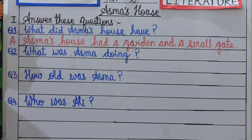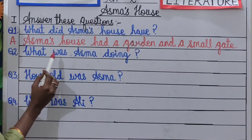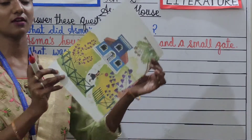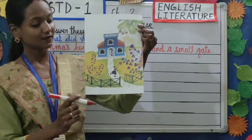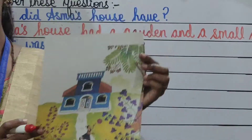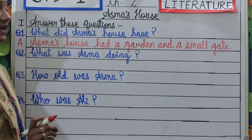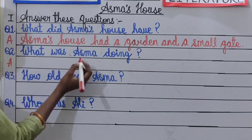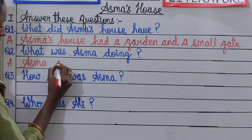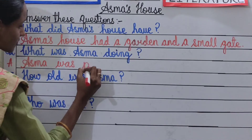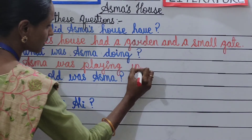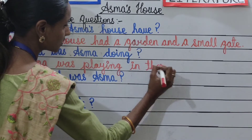Moving on to our second question. Question number 2: What was Asma doing? To answer this question, let's again see this picture. Can you see Asma here? She is playing in the garden. So our answer is: Asma was playing in the garden.